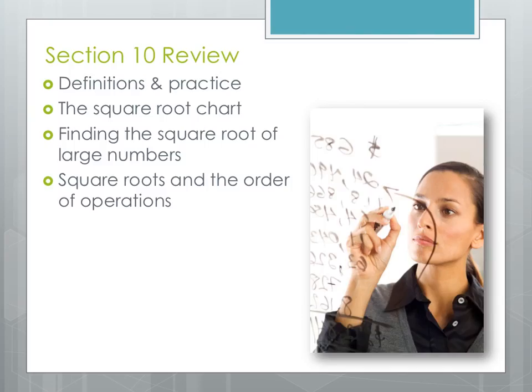So to review, that covers everything in section 10. We discussed the definition of a square root and did some practice with some small numbers. We talked about how to use the square root chart. We found a square root of a very large number. And then we talked about how square roots worked into the order of operations. So good luck on your work with section 10. And tune in next time for our last section of DMA 10, section 11, where we'll talk about the Pythagorean theorem.